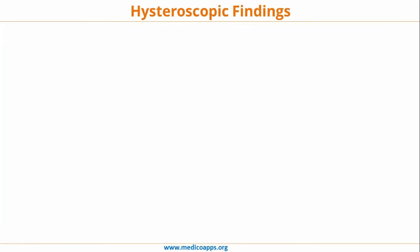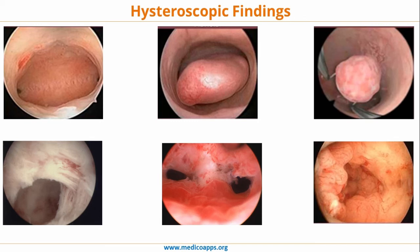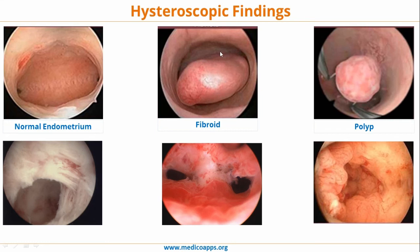Let's look at comparative hysteroscopic findings. The first image shows a normal endometrium — this is how a normal endometrium looks. The second shows a fibroid, and the third shows a polyp. Notice the difference: the fibroid is well-delineated and muscular, while the polyp represents a proliferation from the endothelium.